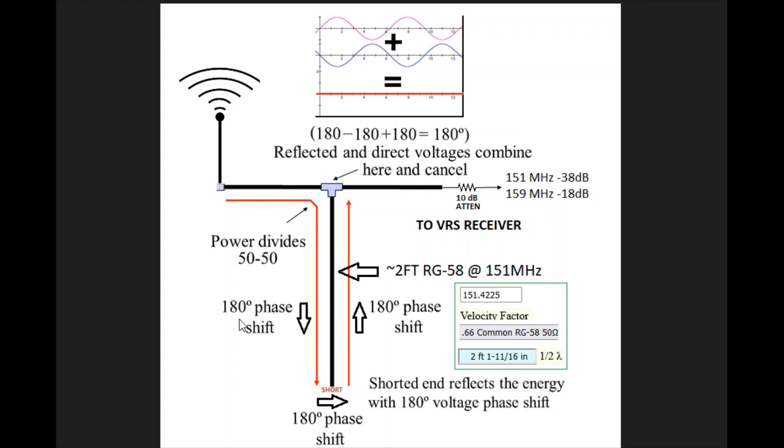So what happens is as the signal gets here, it goes 180 degrees out of phase or shifts because this coax is 180 degrees long. It's actually, there's a thing called velocity factor where it moves faster in the cable than it does through the air, so you have to keep that in mind for calculating the length of this thing. But anyway, it comes down here.